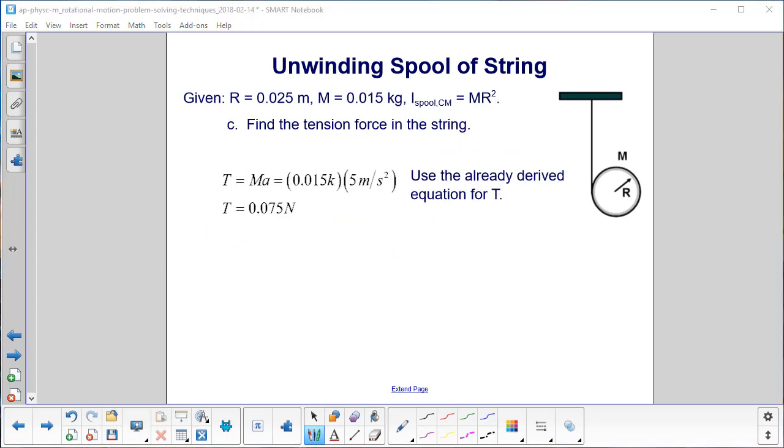Find the tension force in the string. We already have an expression for tension. It's just equal to MA. And then we plug in our value for the acceleration found on the previous slide, and we get the tension is 0.075 newtons.